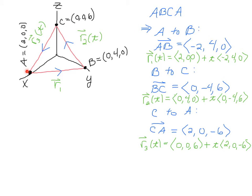And finally, from C to A, this will be R₃, and since we're starting at ⟨0, 0, 6⟩, we'll add t⟨2, 0, -6⟩, which is the direction vector from C to A.